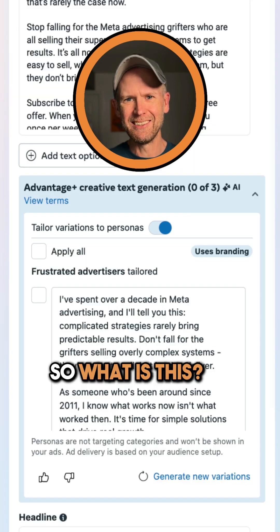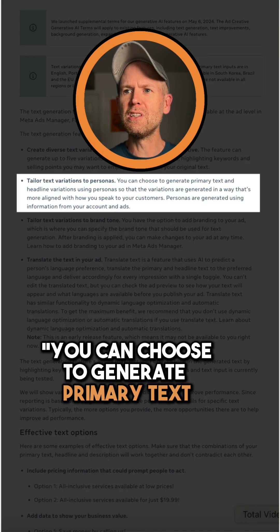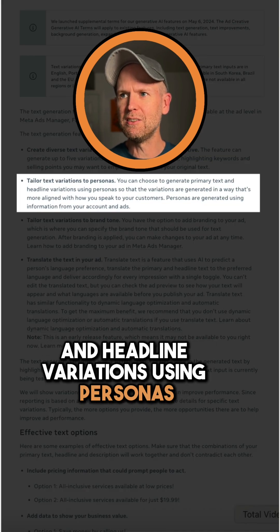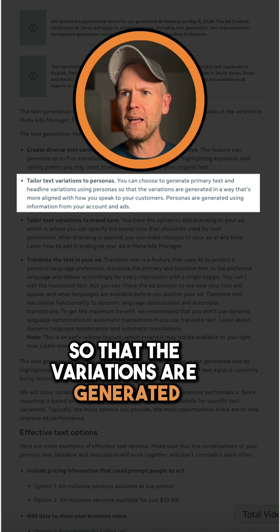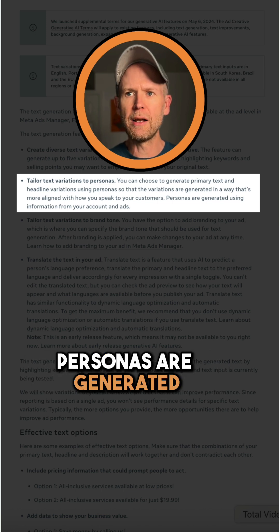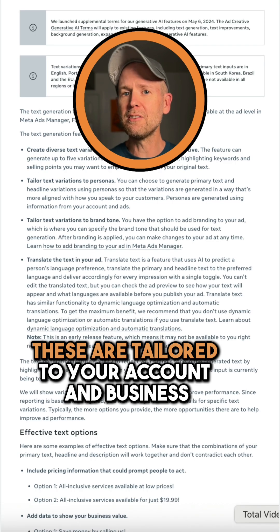So what is this? Within Meta's documentation on text generation, it explains: you can choose to generate primary text and headline variations using personas, so that the variations are generated in a way that's more aligned with how you speak to your customers. Personas are generated using information from your account and ads, so these are tailored to your account and business.